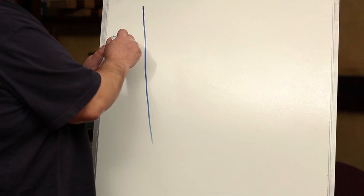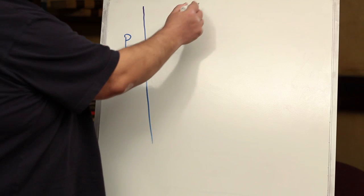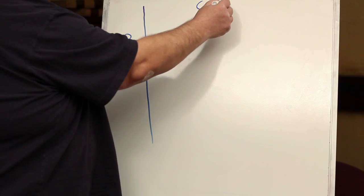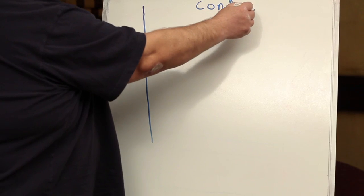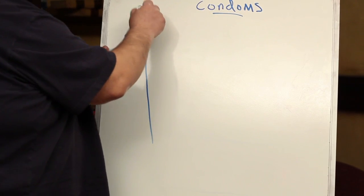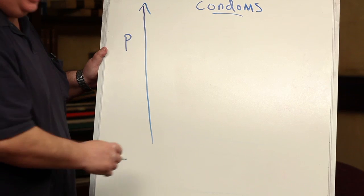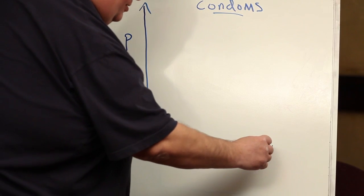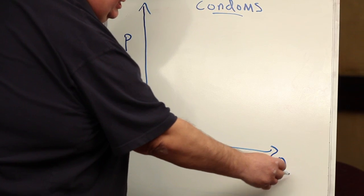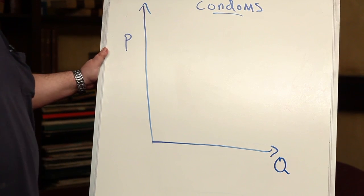Let me show you a graph that may help a little bit with this example. On the vertical axis, we'll put price. In this case, we're talking about the condoms market. And on the horizontal axis, I'm going to put the quantity, in this case the quantity of condoms demanded.